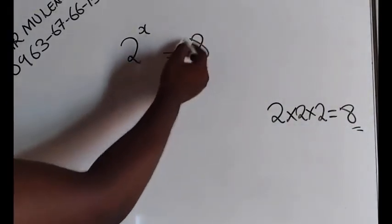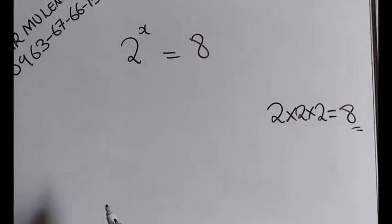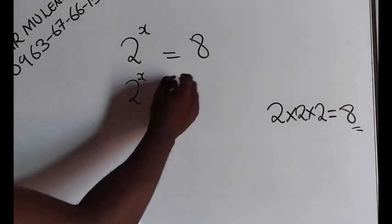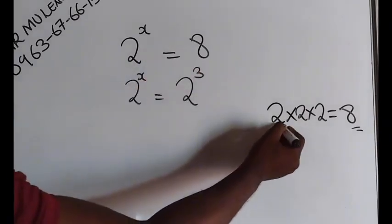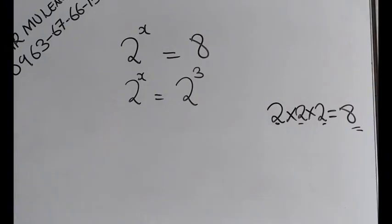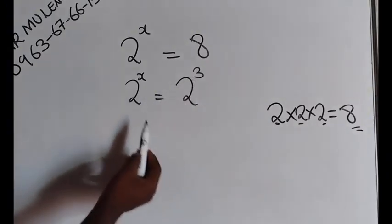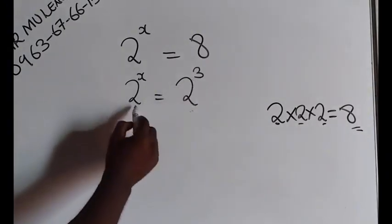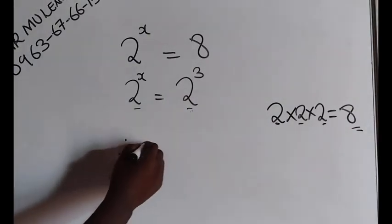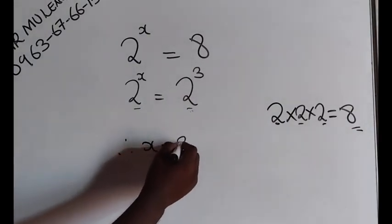The shortest way you can write this 8 in index form is going to be write 2 to the power of x is equal to 2 to the power of 3, because 2 was multiplied by itself 3 times. Hence, the power of 3. We have the same bases right here. The bases are the same. So we equate the power. Therefore, the value of x is equal to 3.